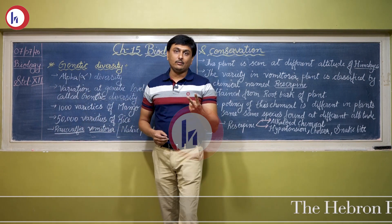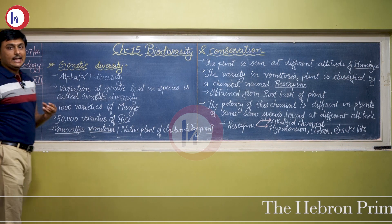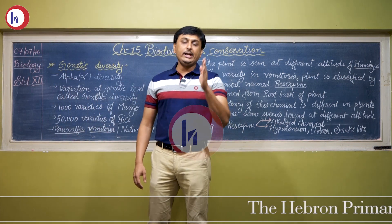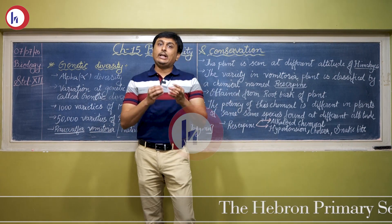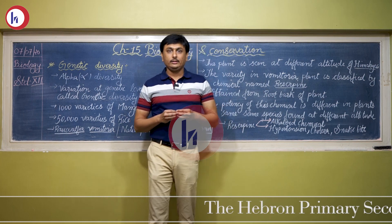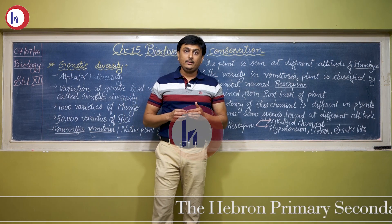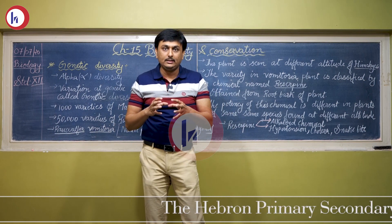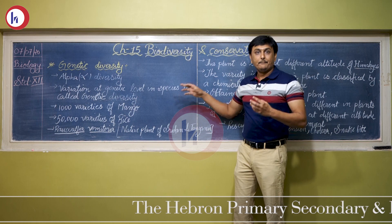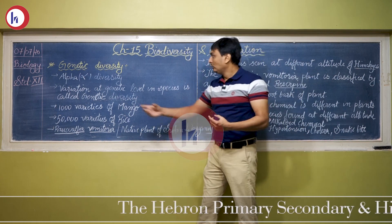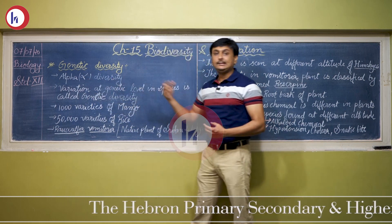The three levels are: genetic level, species level, and ecosystem level. The first one is genetic diversity. Genetic diversity, as the name itself suggests, means the changes in the genetic makeup of organisms. For example, there are a variety of dogs — Labrador, Alsatian, French Mastiff, American Mastiff. These breeds are different from one another, but they are all within the same species. So variation at the genetic level within a species is called genetic diversity, which is also termed as alpha diversity.